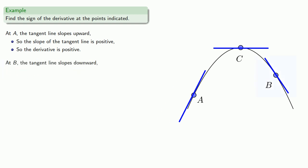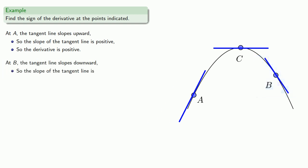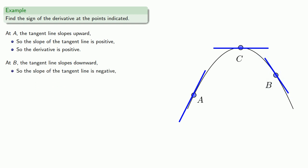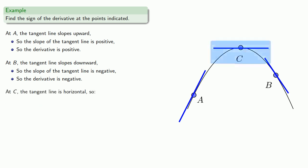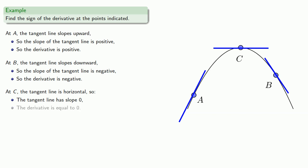At b, the tangent line slopes downward, so the slope of the tangent line is negative, and so the derivative is negative. At c, we see the tangent line is horizontal, and so the tangent line has slope 0, and the derivative is equal to 0.